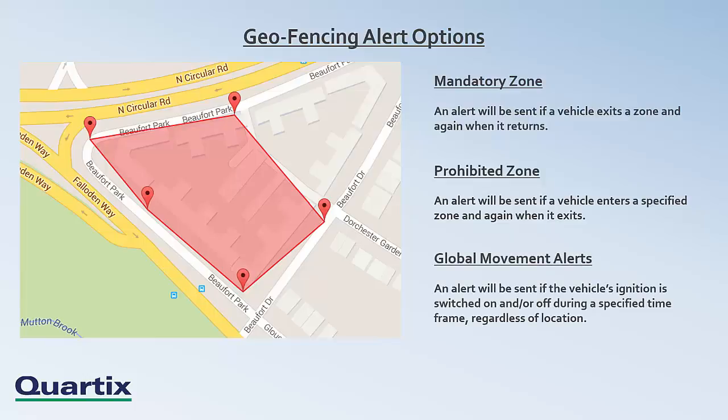There is a third option, the global movement alert, which is based only on movement made during a specified timeframe. An alert will be generated if the vehicle's ignition is switched on or off, regardless of location. This option may be useful if you wish to track if and when a vehicle is used for private use outside of working hours.